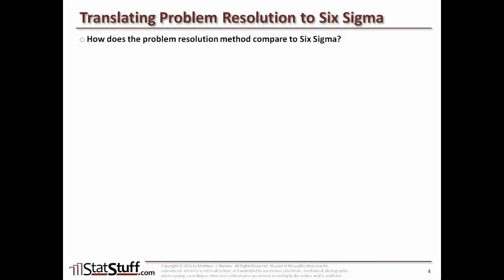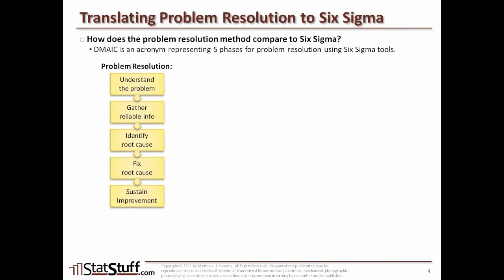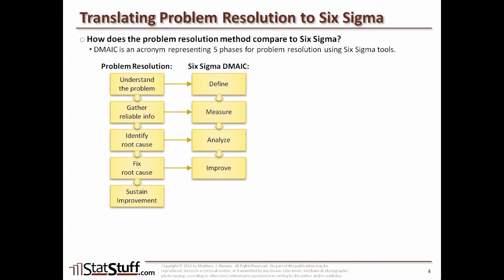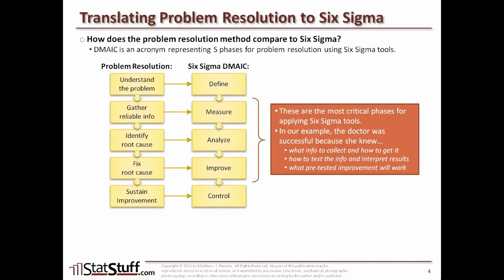Now let's translate this to the DMAIC methodology of Six Sigma. DMAIC is the Six Sigma methodology acronym standing for five phases used to resolve problems with Six Sigma tools. The five steps map as follows: understanding the problem = Define; gathering reliable information = Measure; identifying the root cause = Analyze; fixing the root cause = Improve; sustaining the improvement = Control. The inner phases — Measure, Analyze, and Improve — are arguably the most critical within the entire DMAIC methodology.